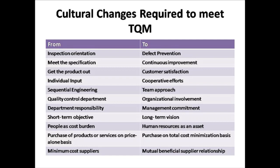Traditionally one department was entirely responsible for quality; now the entire management team is committed to product quality. Traditionally it was a short-term objective — produce a batch and send it out; now it is a longer-term vision of continuous improvement. Traditionally people were seen as a cost burden; now people working in the company are seen as human resources, which are an asset. Traditionally purchasing was done on a price-alone basis; now it is done on a total cost minimization basis. Traditionally minimum-cost suppliers were chosen; now a mutually beneficial supplier relationship is developed.